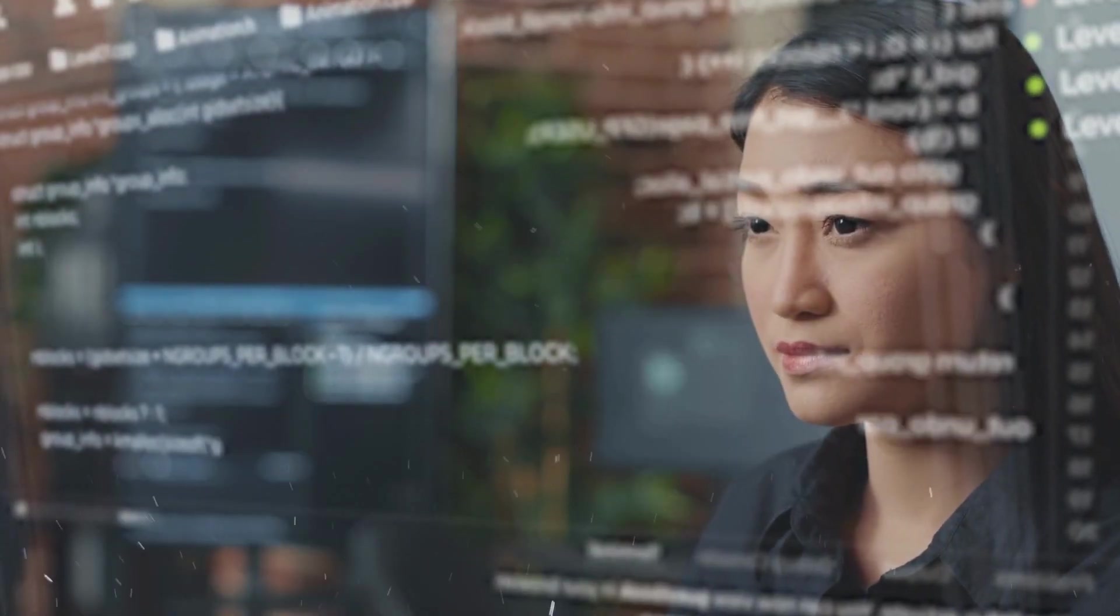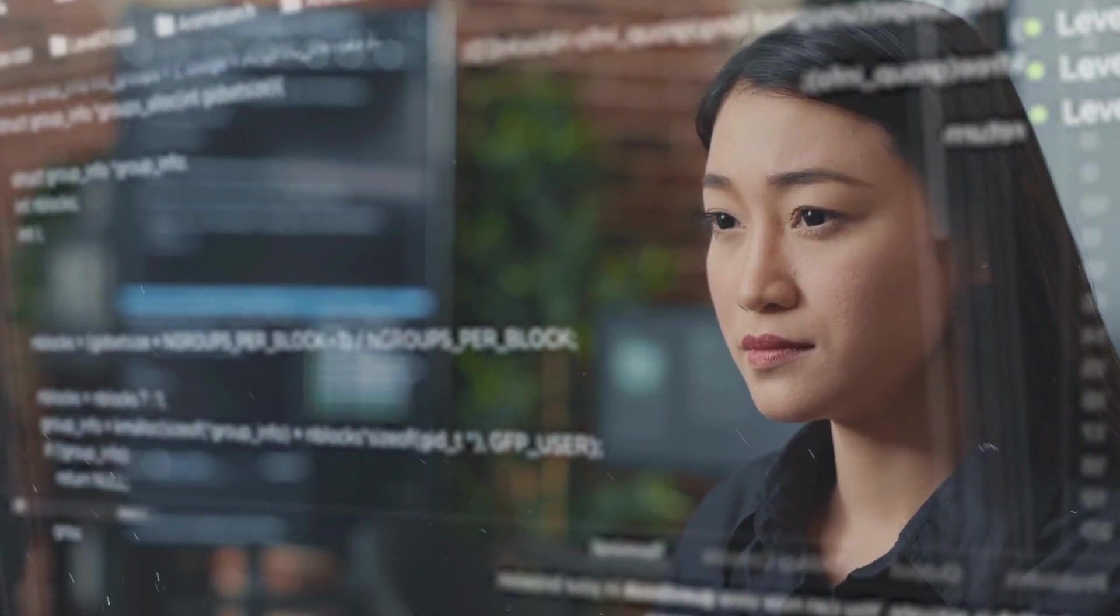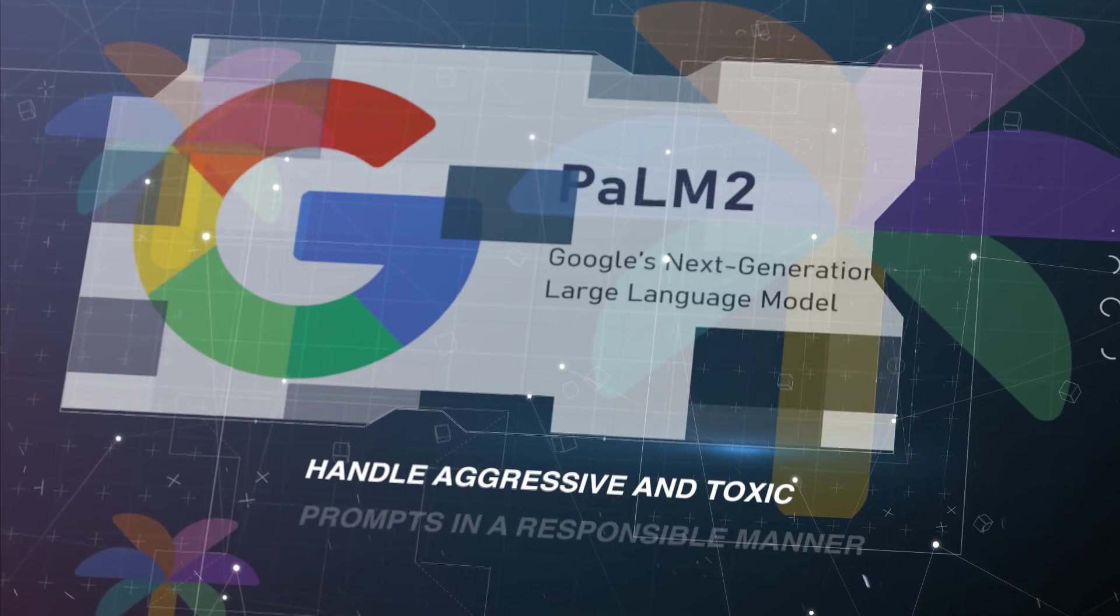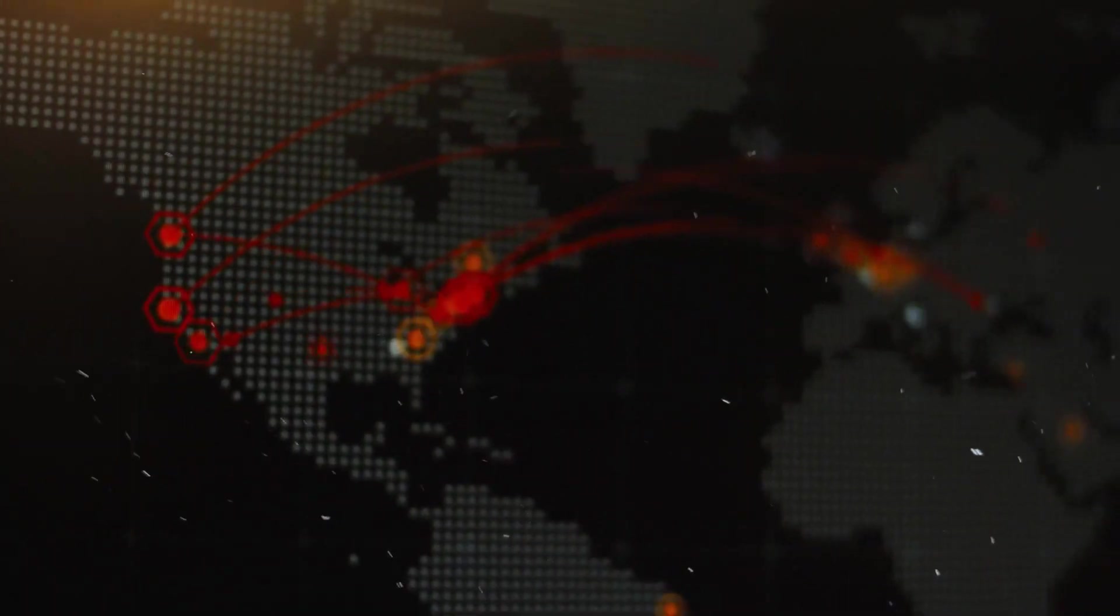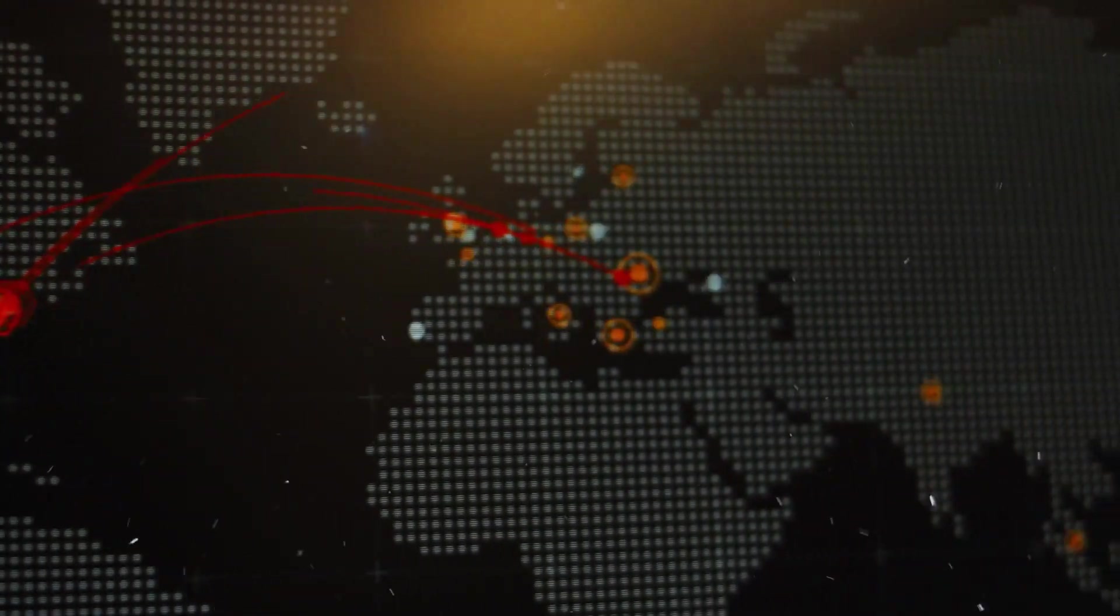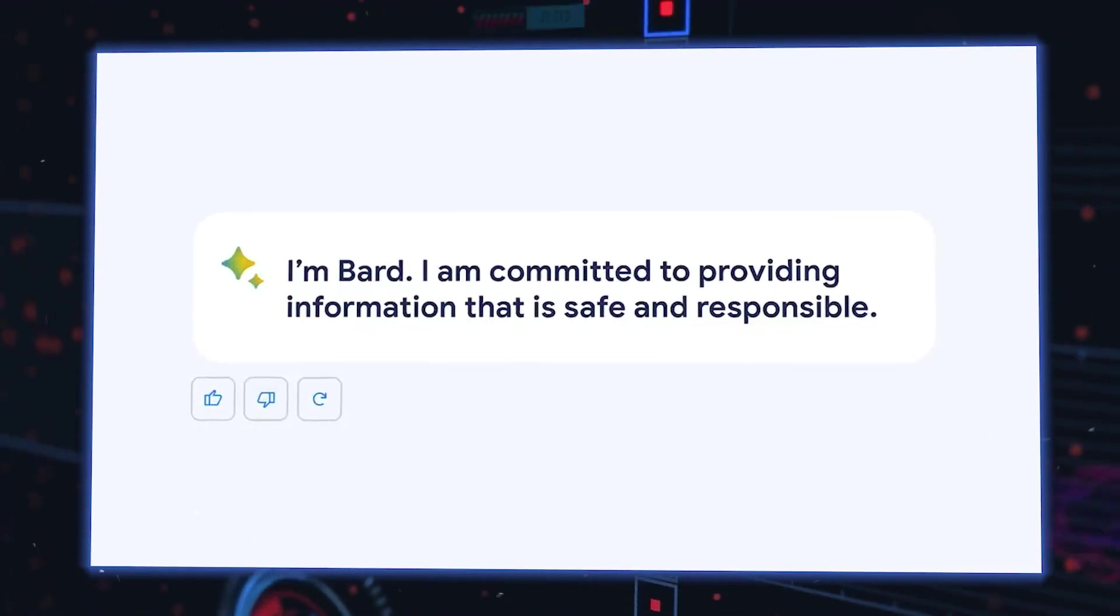Google has a strong commitment to providing safe and ethical tools to the public. That's why PaLM 2 is specifically trained to handle aggressive and toxic prompts in a responsible manner. PaLM 2 doesn't engage in or encourage such conversations. Instead, it redirects them towards more positive directions.